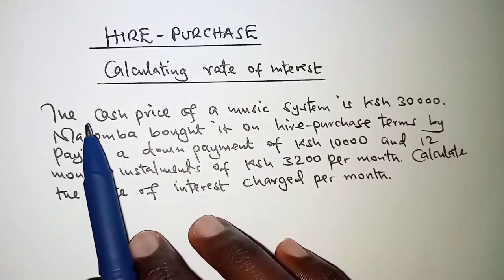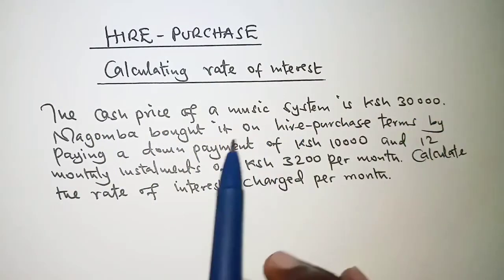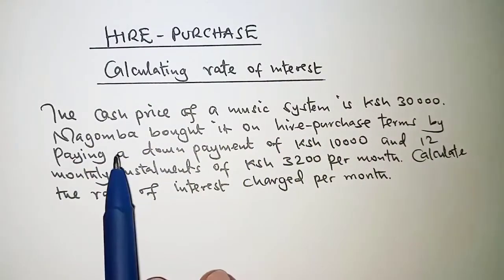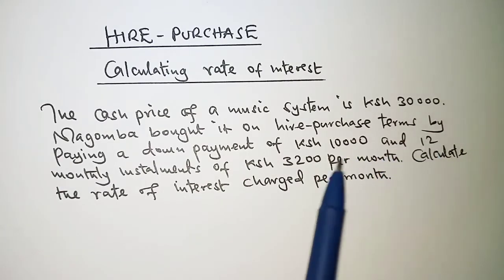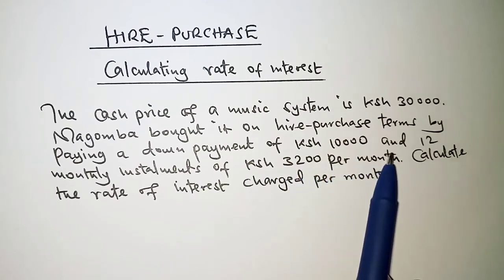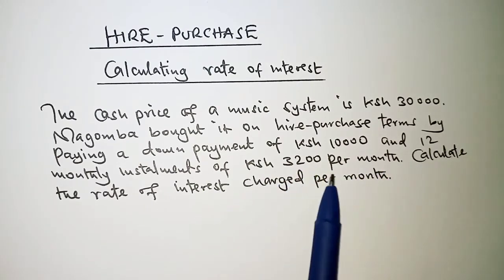So the question reads: the cash price of a music system is 30,000 Kenyan shillings. Magomba bought it on hire purchase terms by paying a down payment of 10,000 Kenyan shillings and 12 monthly installments of 3,200 per month. Then calculate the rate of interest charged per month.